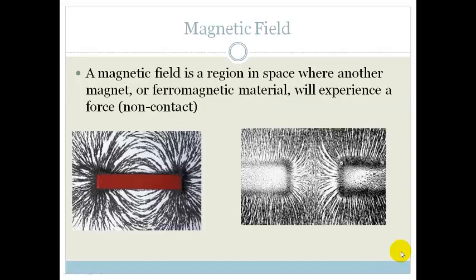So, let's start with a magnetic field. The definition of a magnetic field is that it is a region in space where another magnet or a ferromagnetic material, such as iron, will experience a force. And what you've got here are two diagrams of magnetic fields.